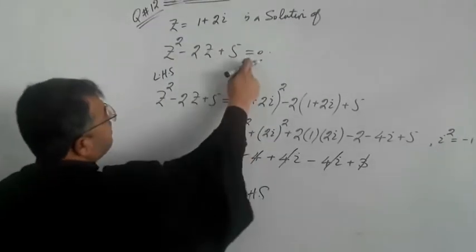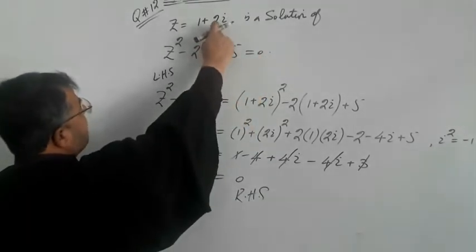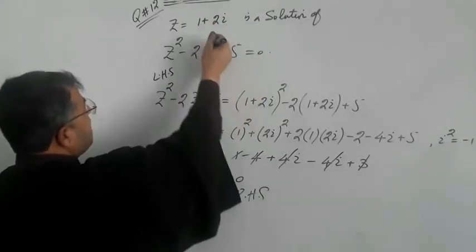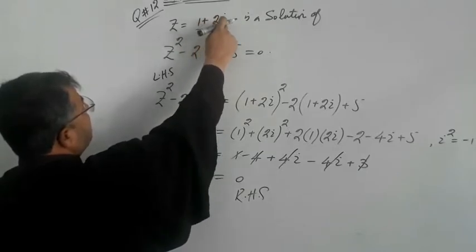Which is equal to the right hand side of this equation. So Z is equal to 1 plus 2 iota is the solution.